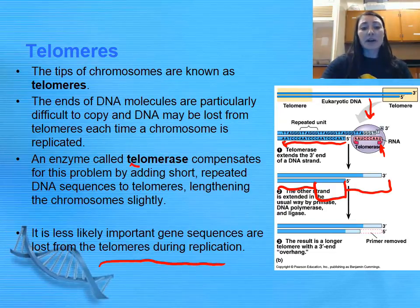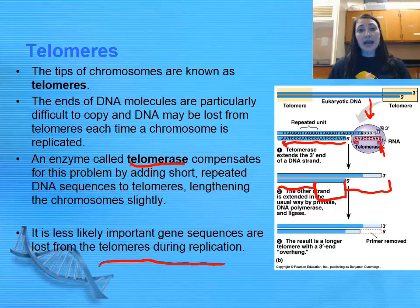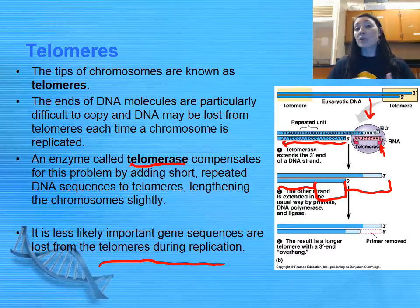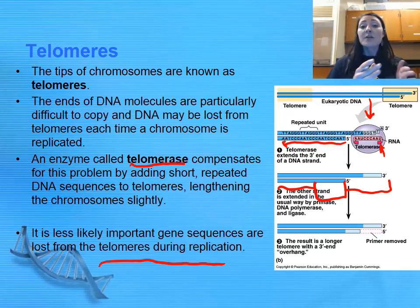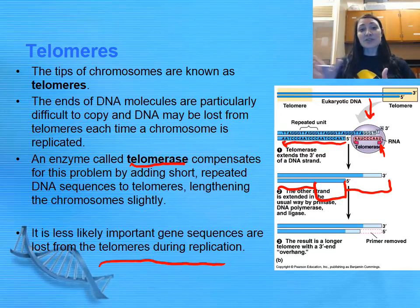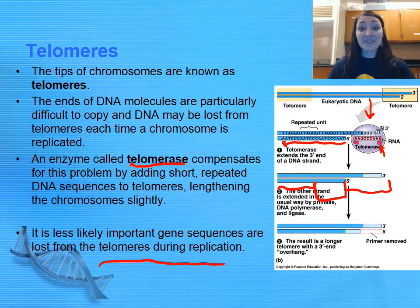The enzyme telomerase adds telomeres back to the end of the DNA segment, but it does not do that forever — it has a certain time span. Interestingly, cancer cells make their own telomerase, meaning they can continue to add telomeres to the end so the DNA can replicate indefinitely in those cancerous cells.